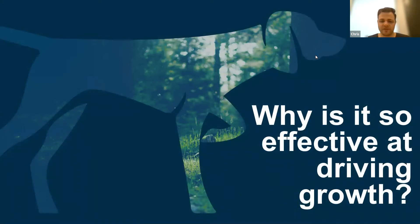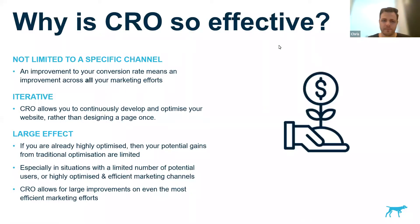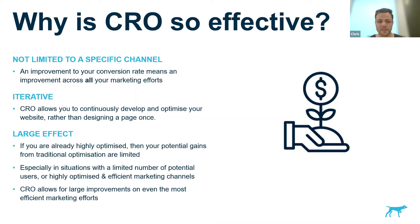So why is CRO so effective at driving growth? The key thing to call out is we're talking about a large effect. With highly optimized paid media campaigns or social campaigns, the improvements you can get are around 1% or 2%. With CRO, we're talking more around 10%, 20%, 30% improvements in conversion rate. And that flows onto all of your channels — if you implement a change on a landing page you're using for social and for paid, that will improve the results of those channels as well.